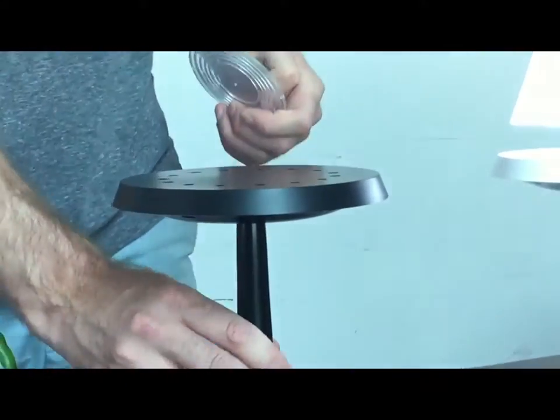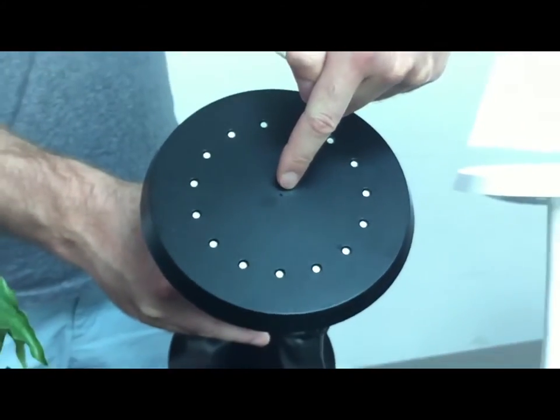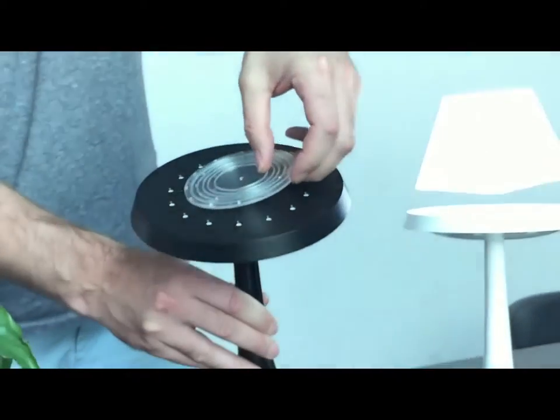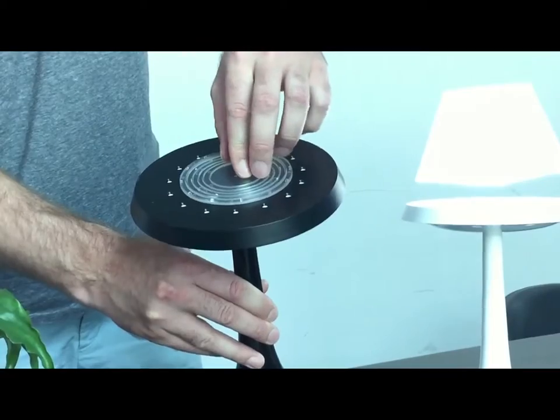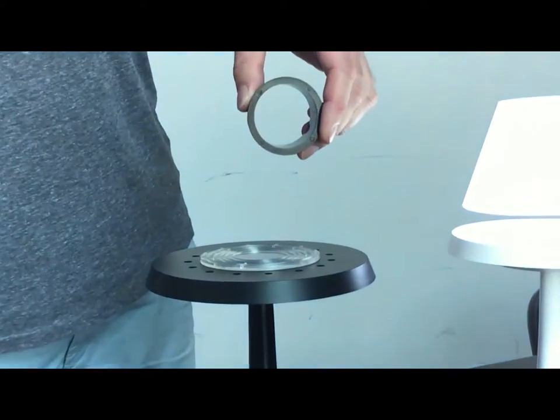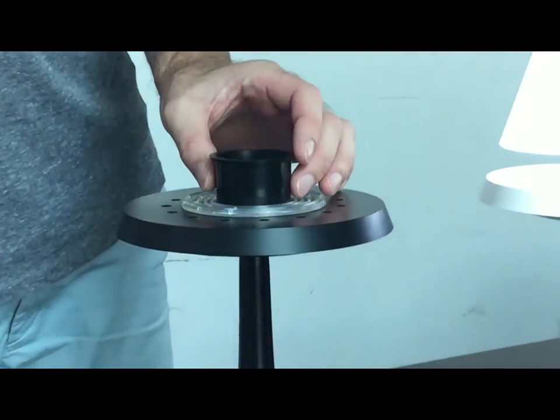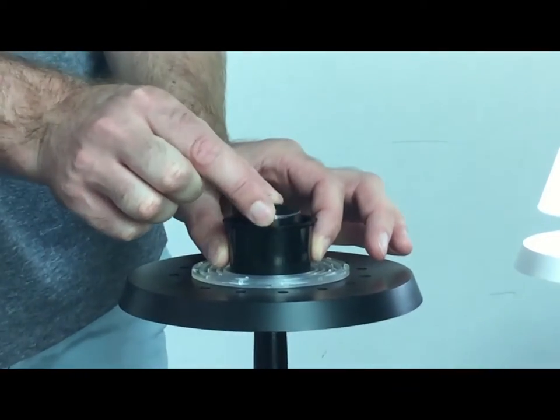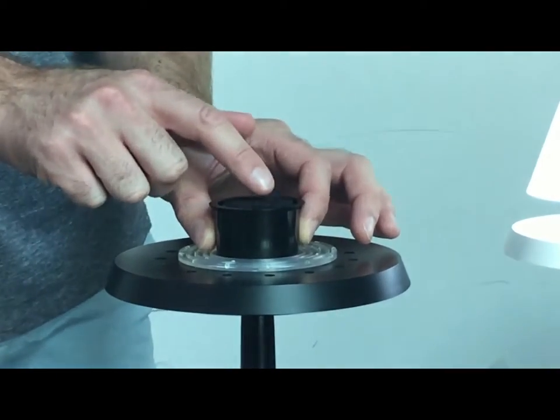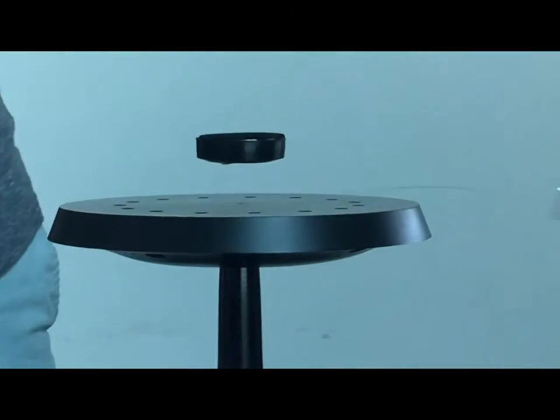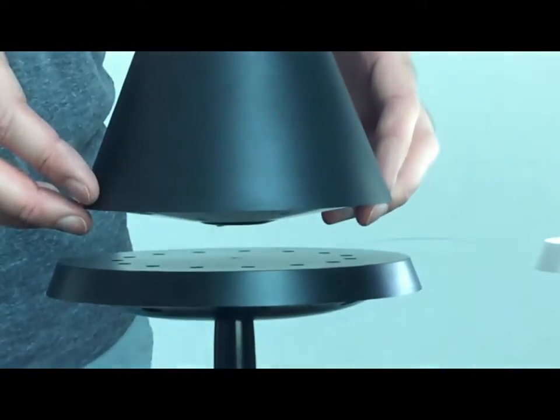For setup we have one hole here and we've designed a special tool. So we center the tool into this hole, place it horizontally. Put this special tube over there and then we take the magnetic disc, drop it in, remove the tube. It's very easy. And then the lampshade simply floats on top of the disc.